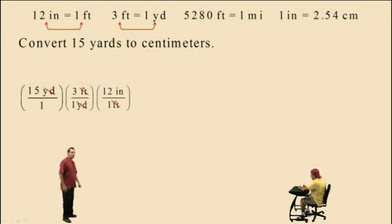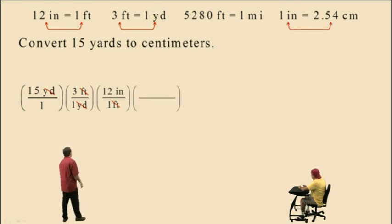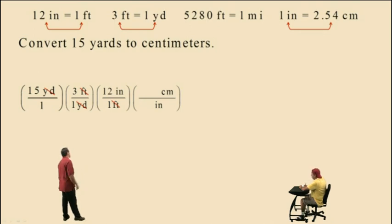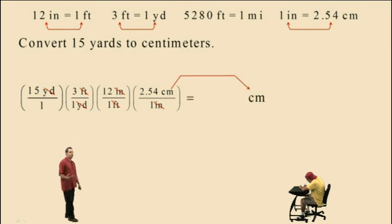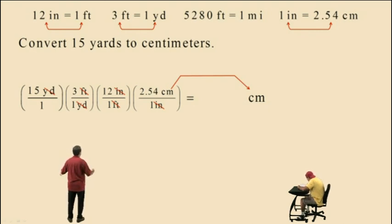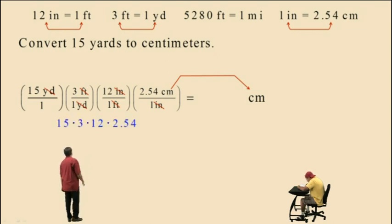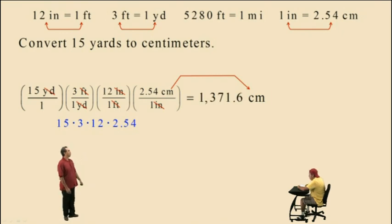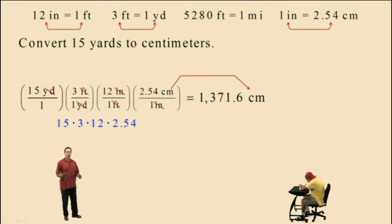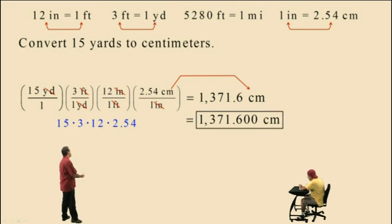We're almost home because we're trying to get to centimeters. We need one more conversion factor to convert inches to centimeters. Notice we put the dimensions of inches on the bottom, centimeters on top. And the ratio of centimeters to inches is 2.54 to 1. Notice inches cancel out and we're left with the dimensions of centimeters, which is what we wanted. To perform this calculation, all the numbers are on top, so we just multiply: 15 times 3 times 12 times 2.54, which gives 1,371.6. Rounded to the nearest one-thousandths, our answer is 1,371 and 600 one-thousandths centimeters.